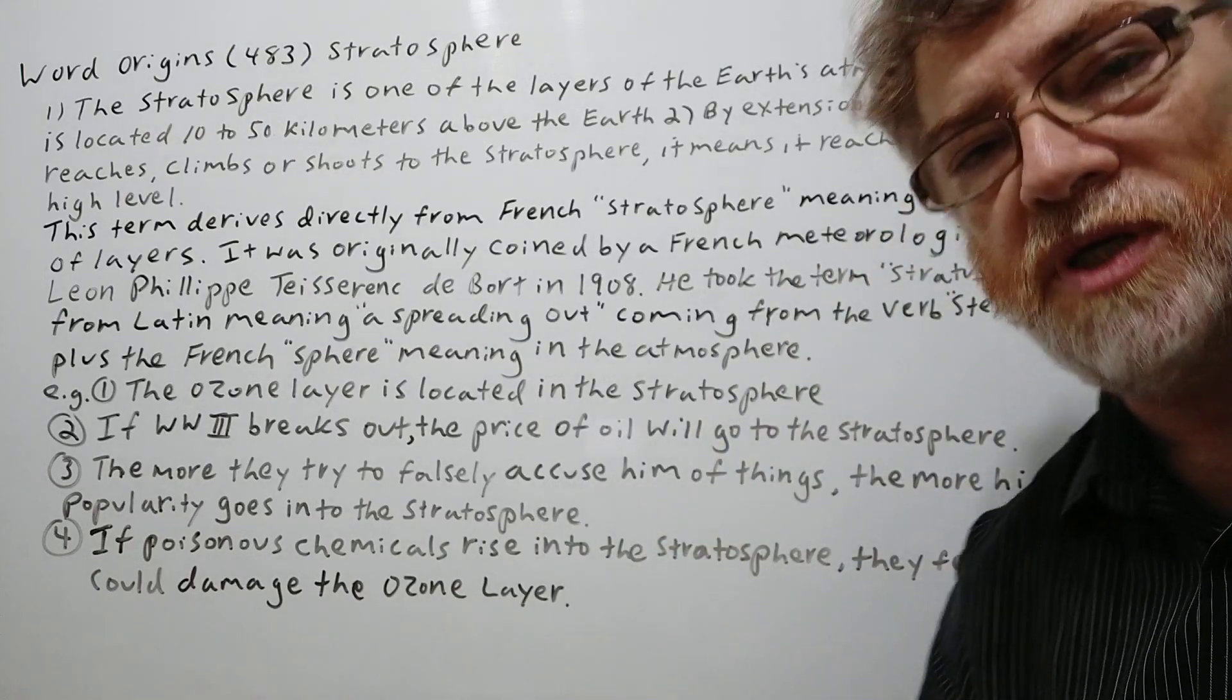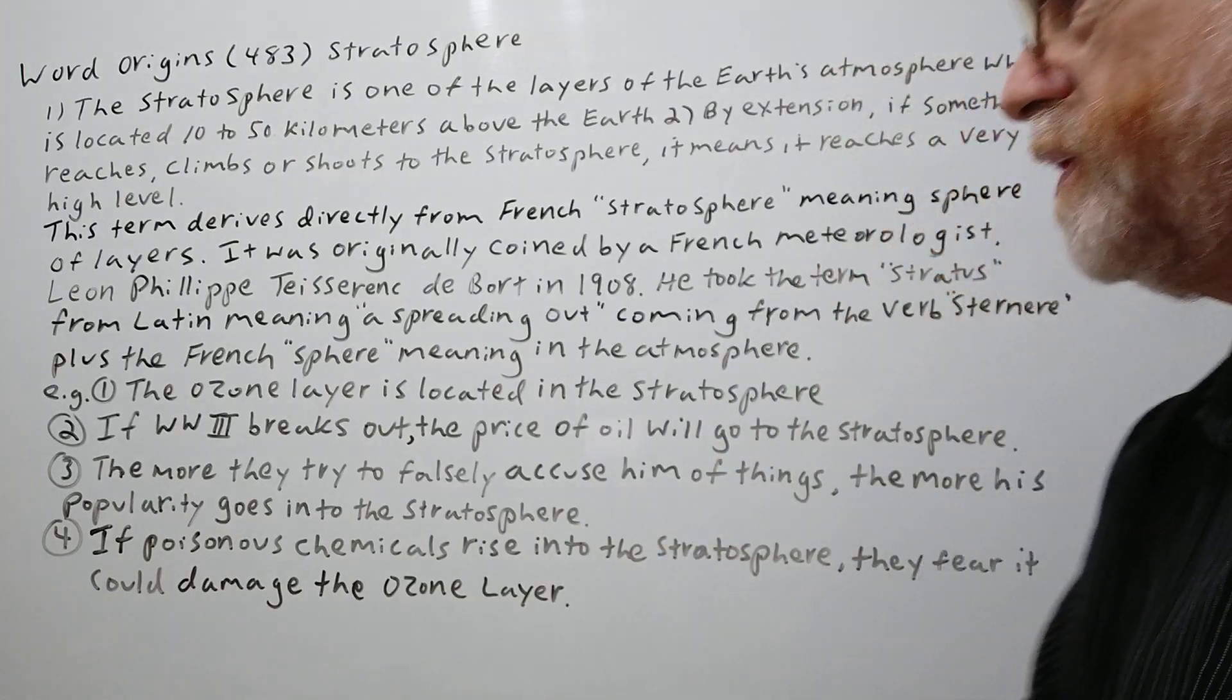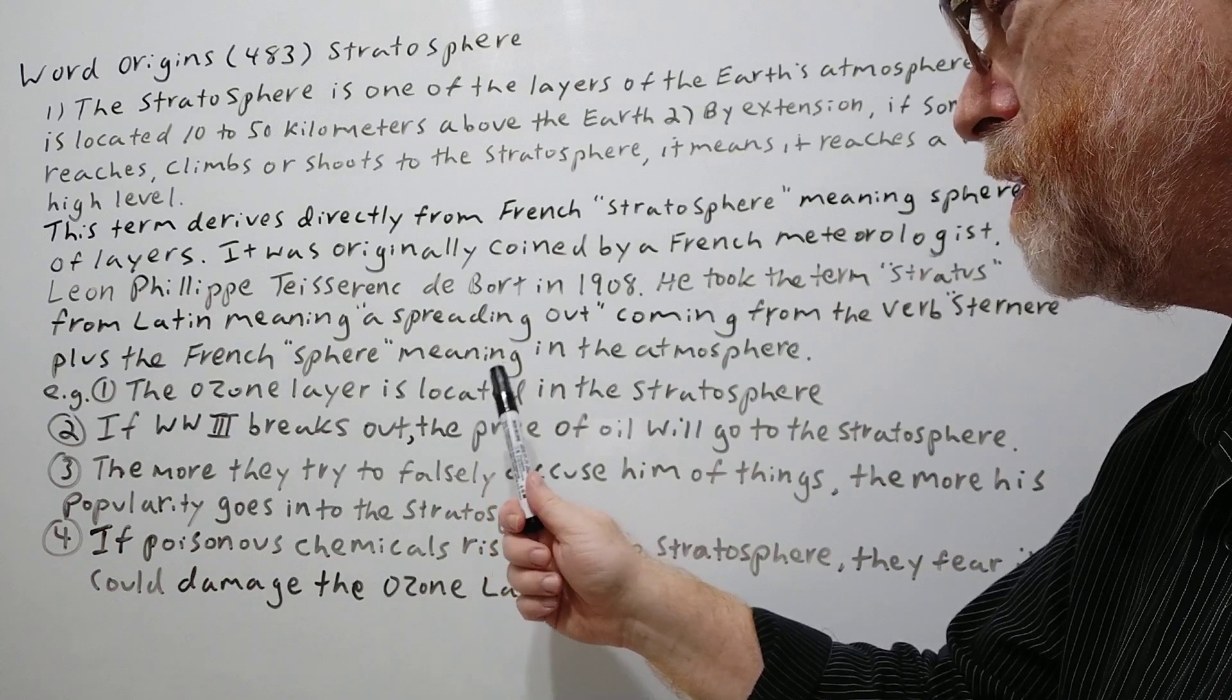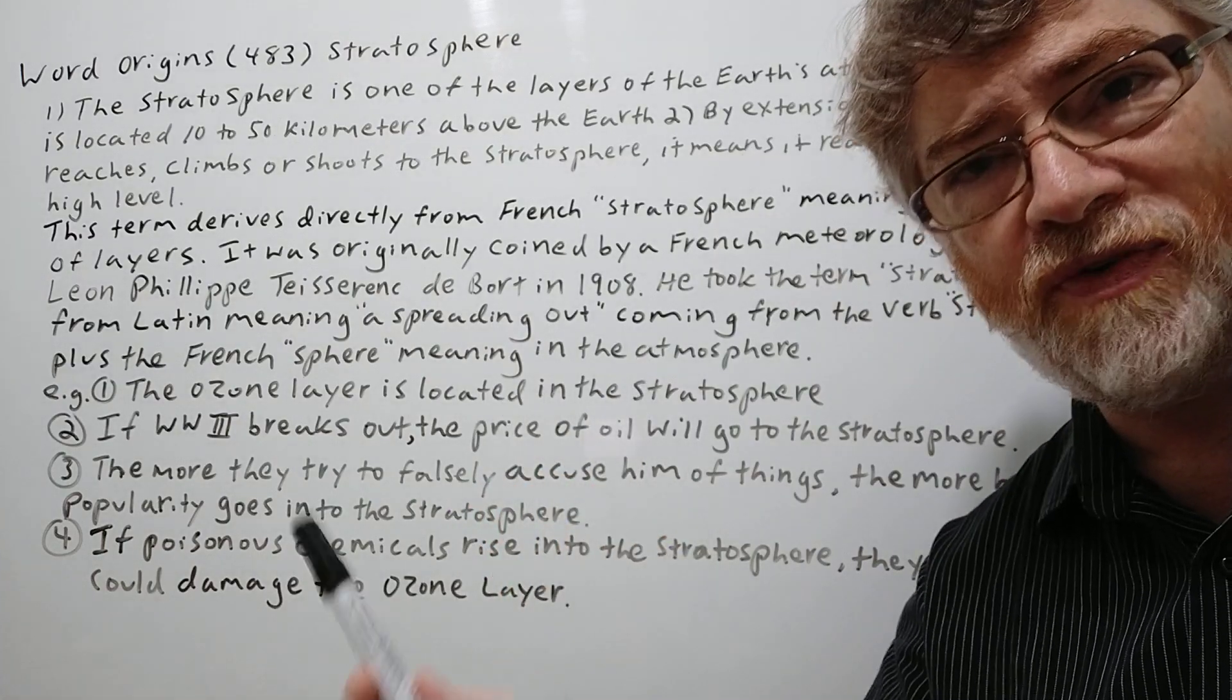And we got four examples here to show just how it's used. Here's the first one. The ozone layer is located in the stratosphere.